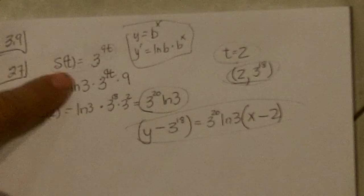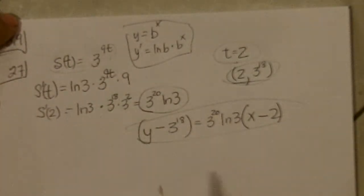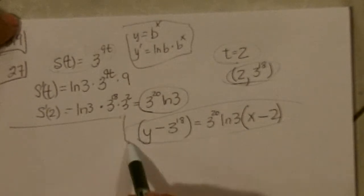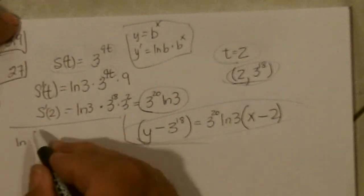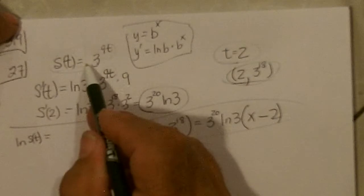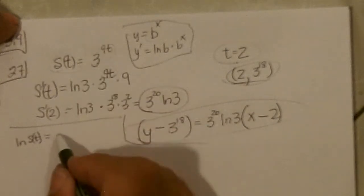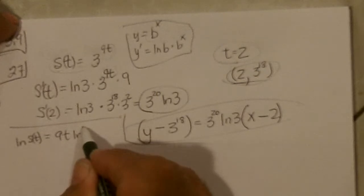Now, we could have also found the derivative by taking ln of both sides. So I wanted to show that also. So let's just take the ln. So we have ln of S of T equals, if I take the natural log of this, the power will come down. So it'll be 9T ln 3.